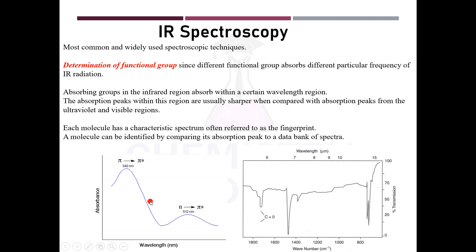If you compare the two spectra here, the first one is the UV spectra — you can see how broad the peaks are. These are the peaks of IR — they are very sharp. A molecule gives very sharp absorption peaks compared to the UV and visible region.